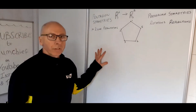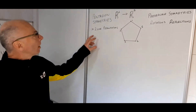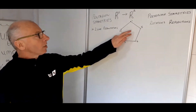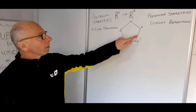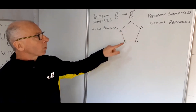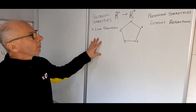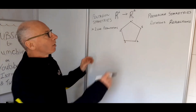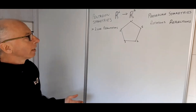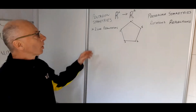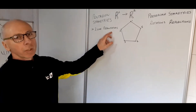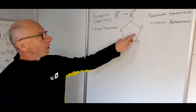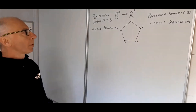We're going to look at some group theory today, and in particular we're going to use this pentagon. This is a regular pentagon with all equal sides. What we're looking for is preserving symmetries by rotating or reflecting, and then we're going to produce some two-line permutations for where each one of these corners ends up.